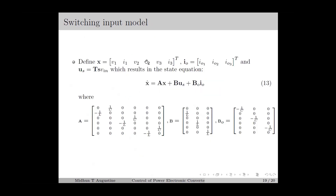By defining the state vector, the output current vector, and the switching input, we obtain the state equation for the inverter as in equation number 30, in which A, B, and B0 are given. Note that this is equivalent to the switched system model, with B sigma split into BU sigma plus B0 I0. That completes the modeling part of power converters. In the upcoming lectures, we will be discussing the analysis and controller design for converters.